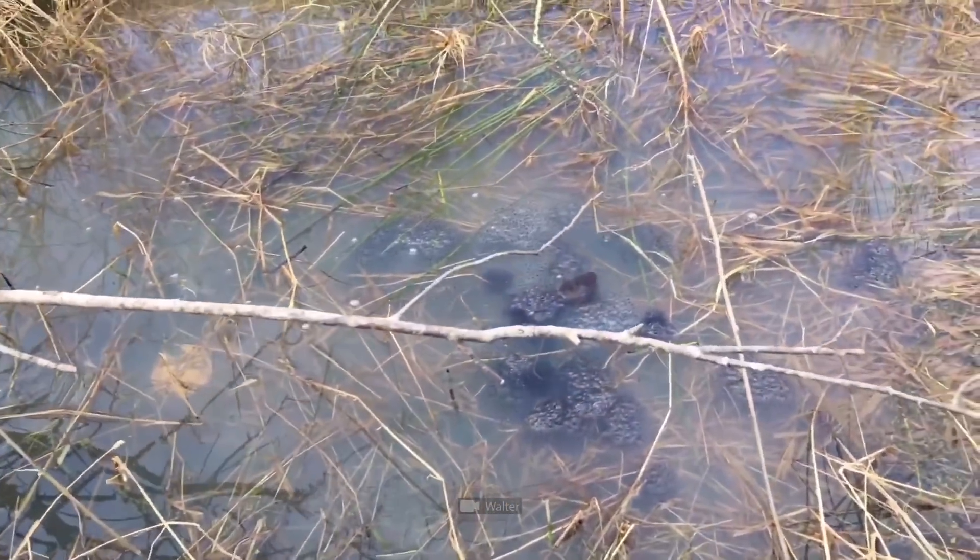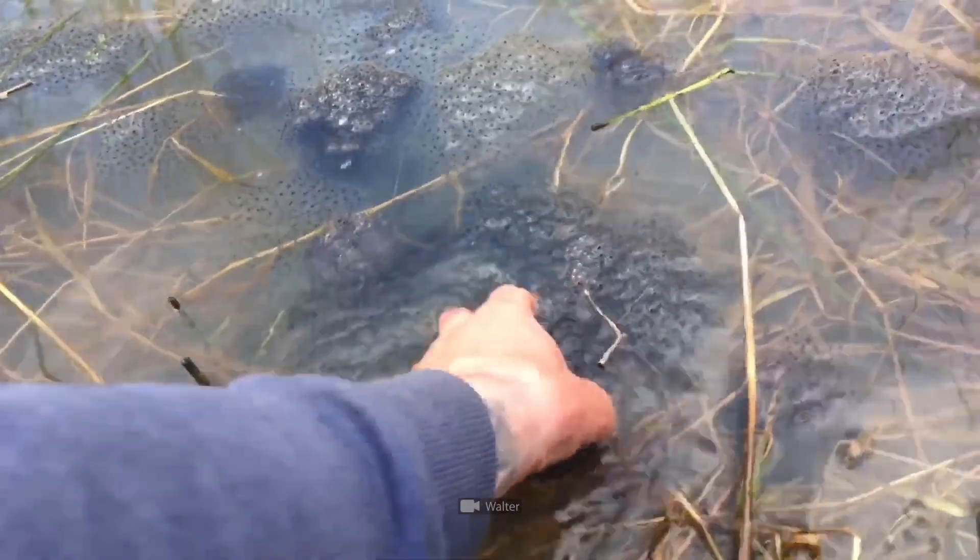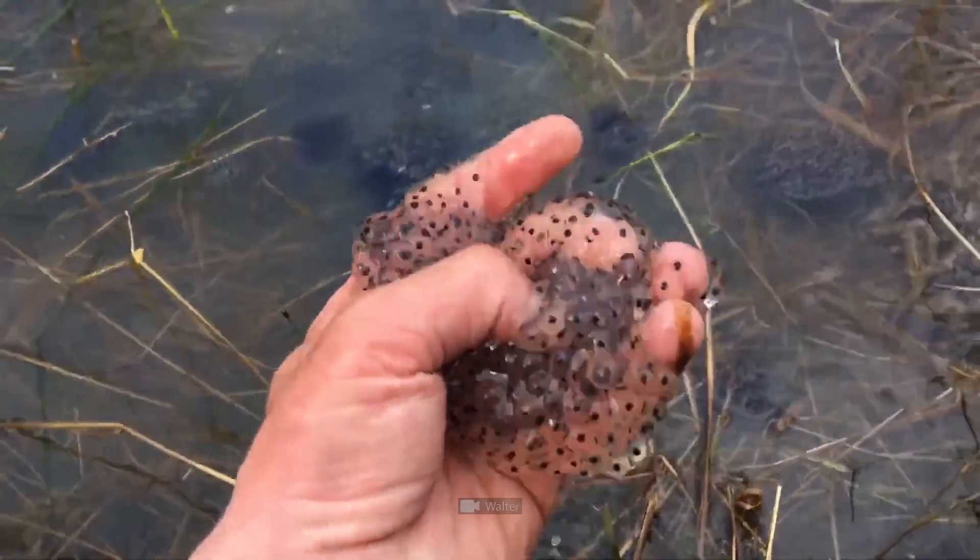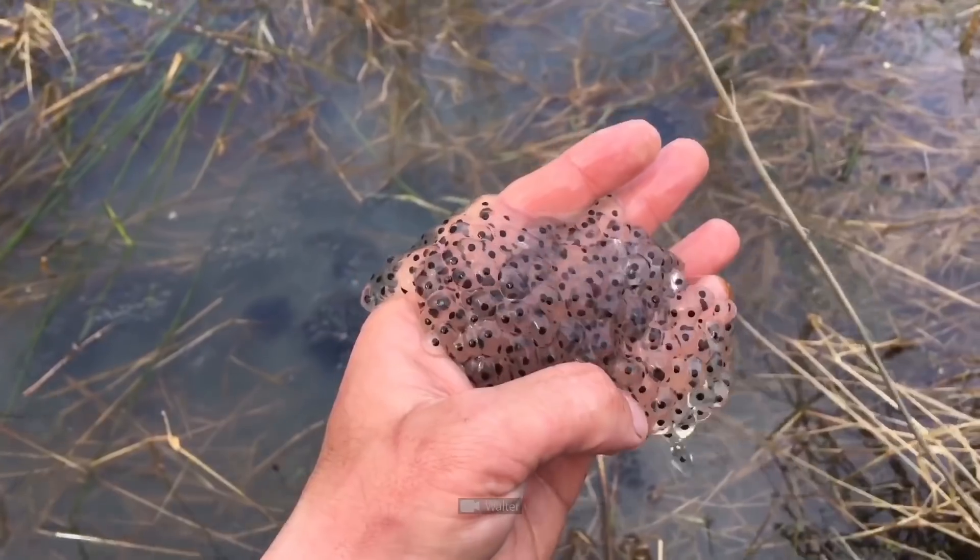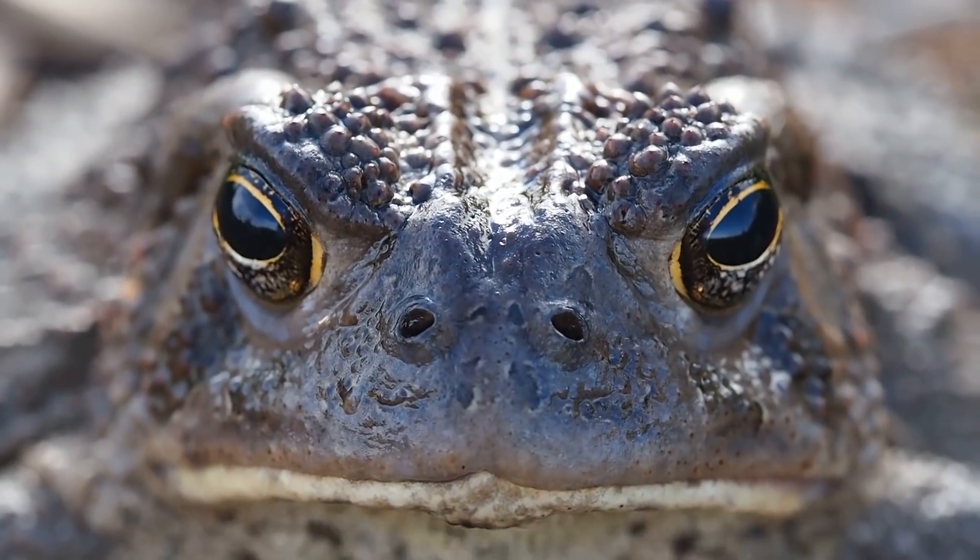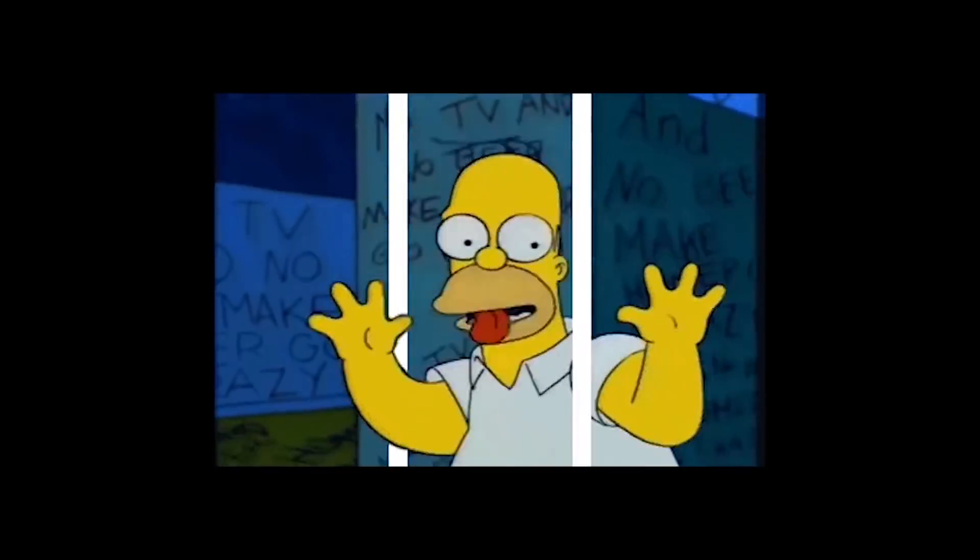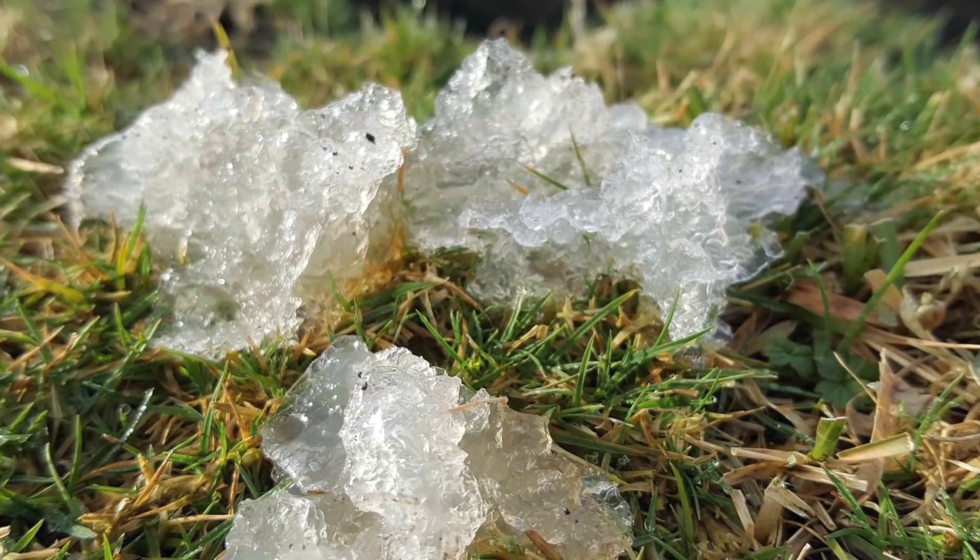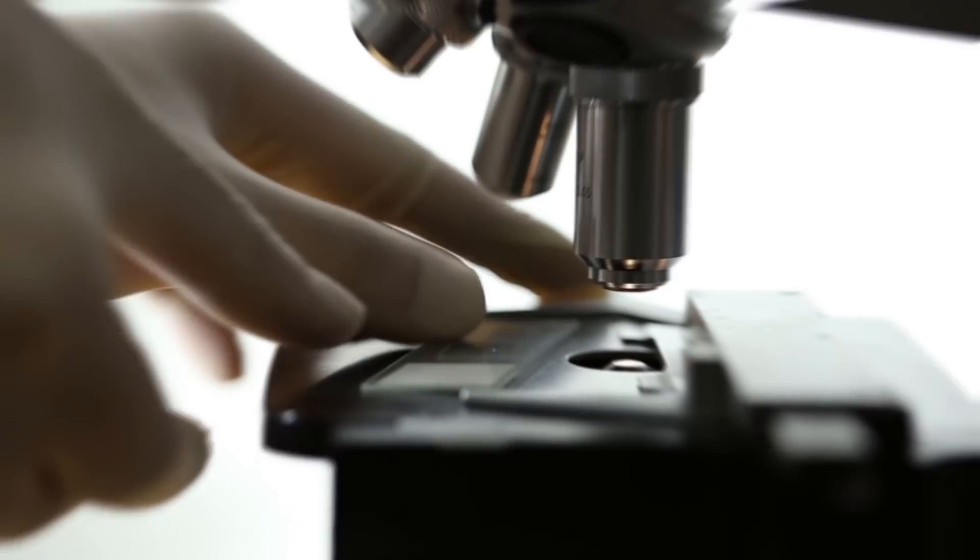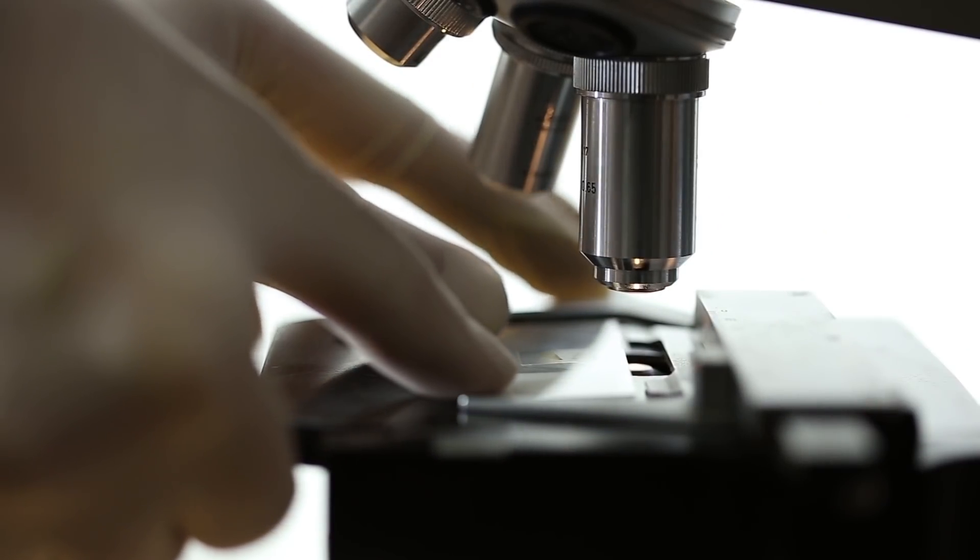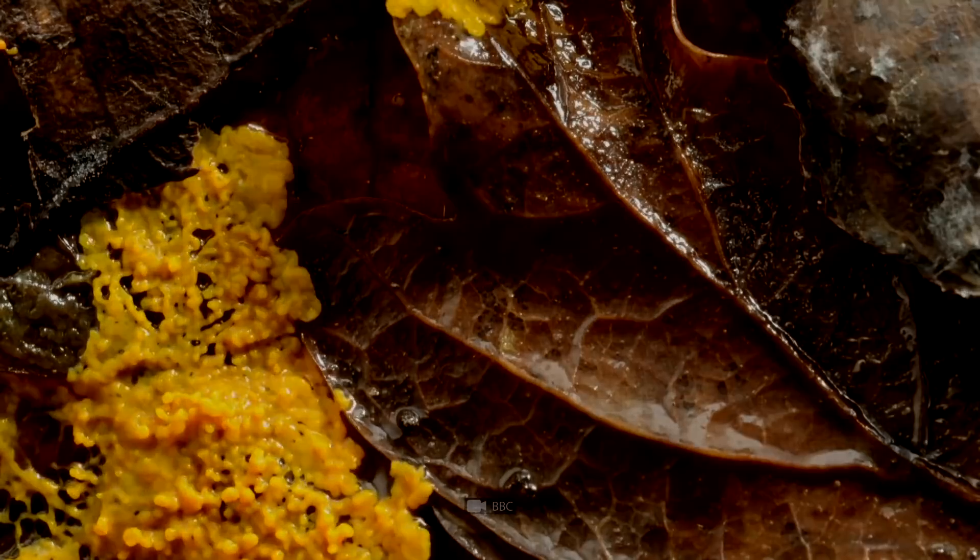Zoologists assume that this stuff might be frog spawn, left behind by predators after they feed on frogs. Other explanations suggest decomposed bodies of toads or deer sperm. Very little analysis has been done on star jelly to date, and what has been done has failed to find any DNA.